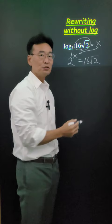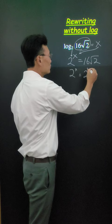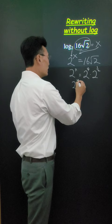Then, leaving the left side alone, 16 becomes 2 to the 4th power. Root 2 becomes 2 to the 1/2 power. Then, adding the 4 and the 1/2, we get 2 to the 9 over 2.